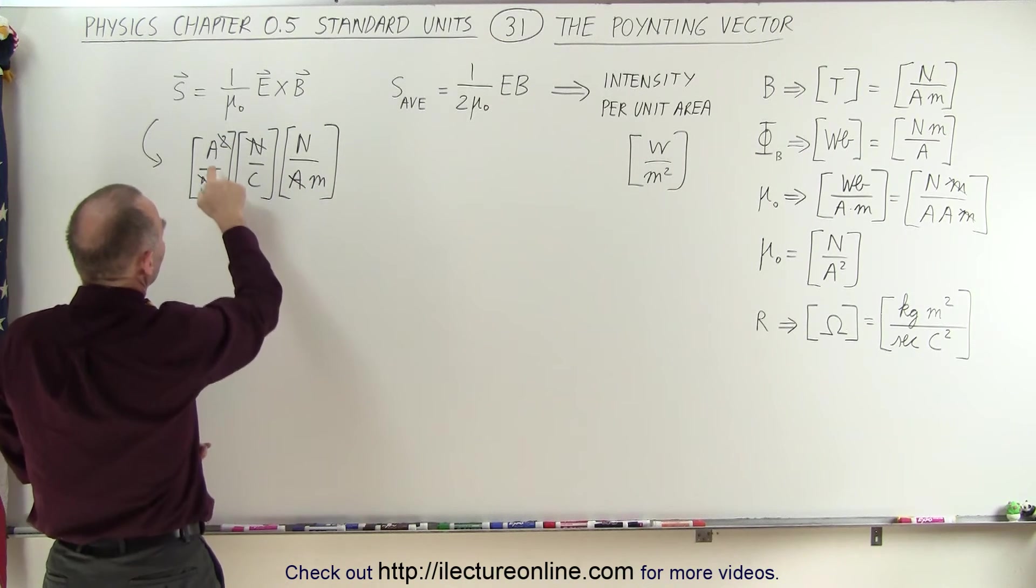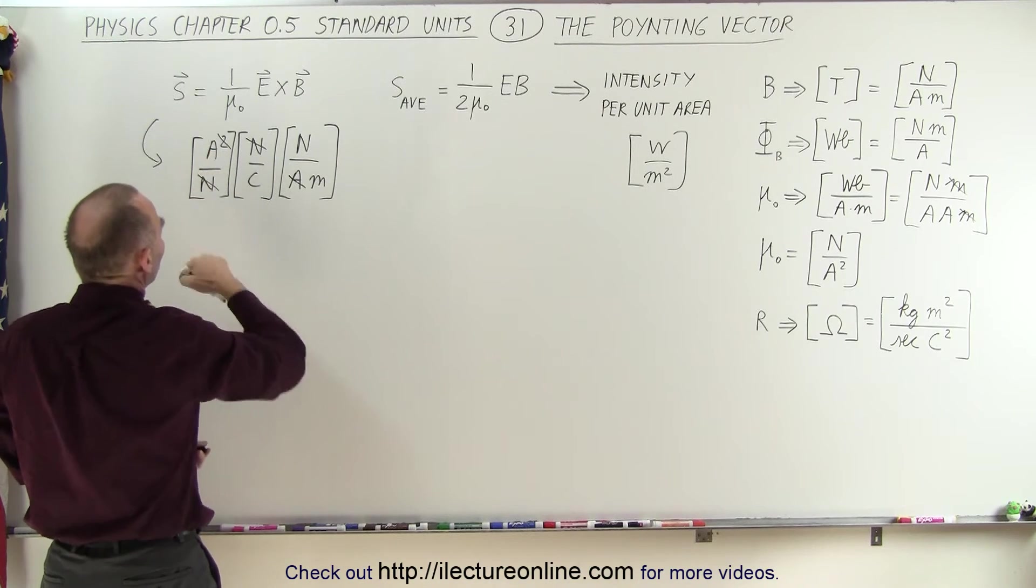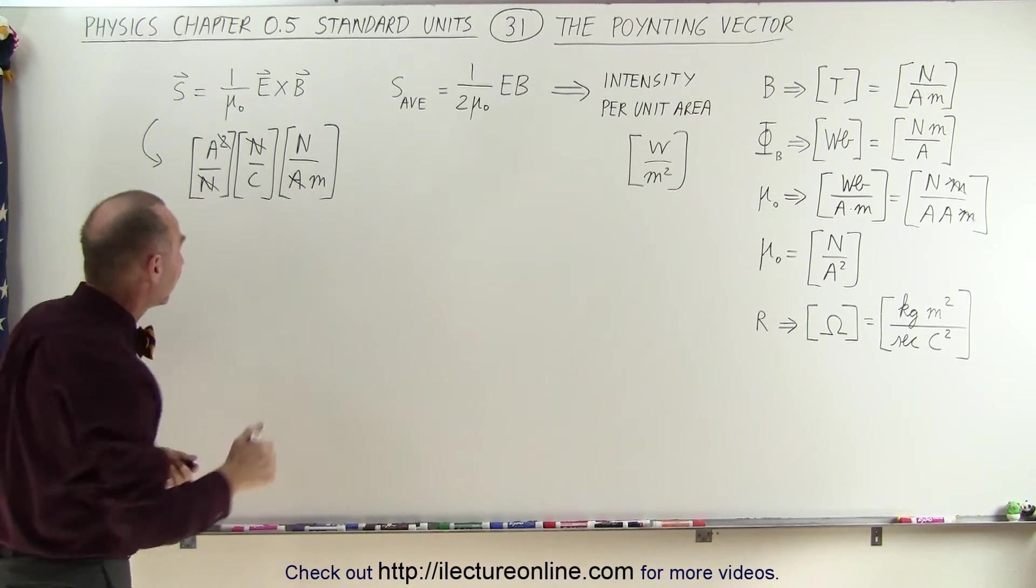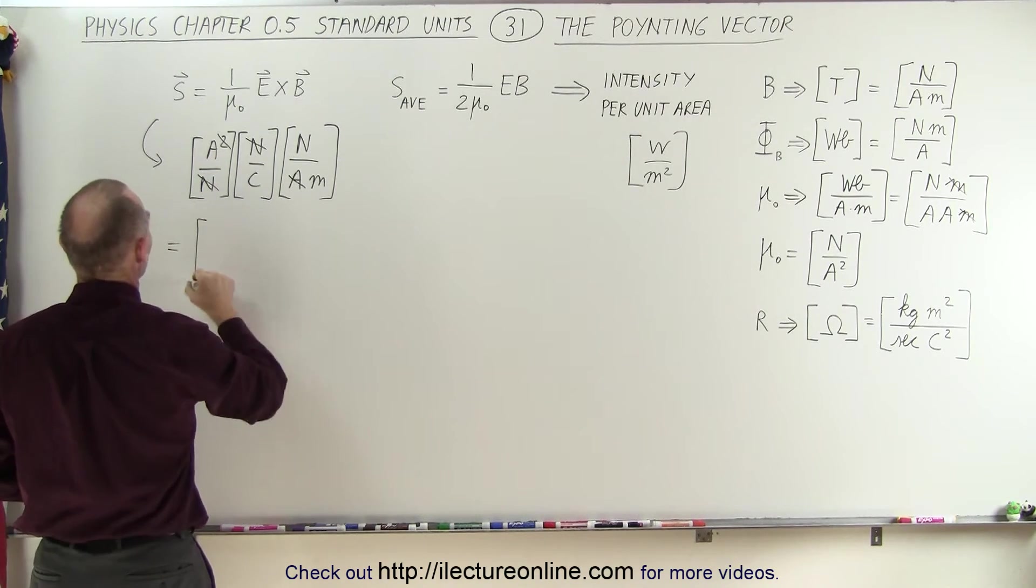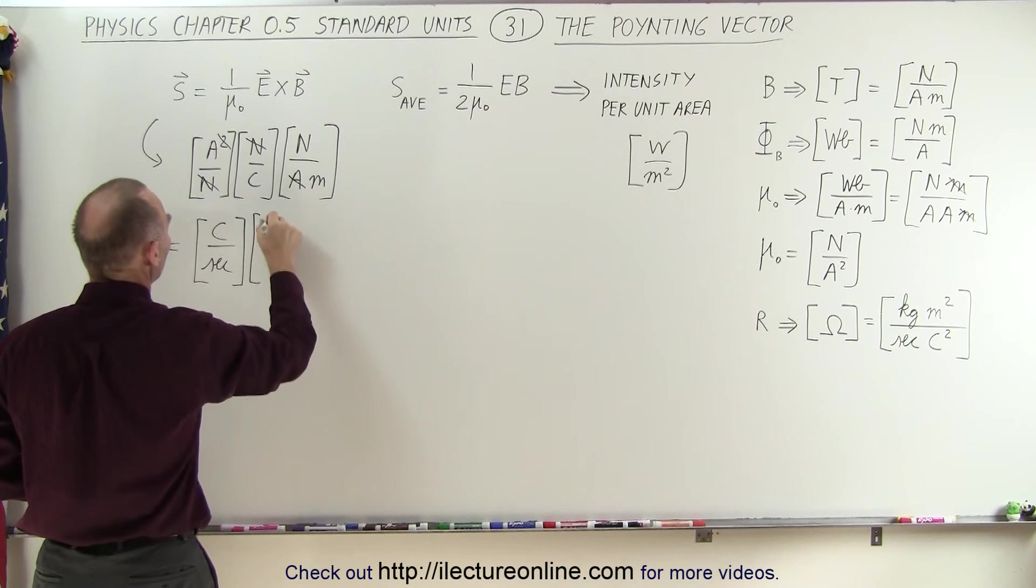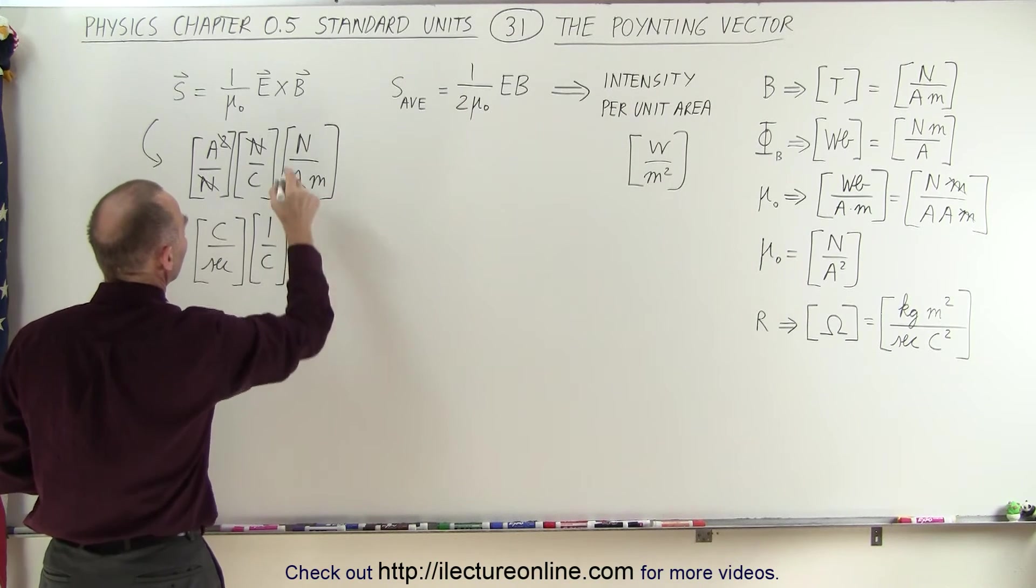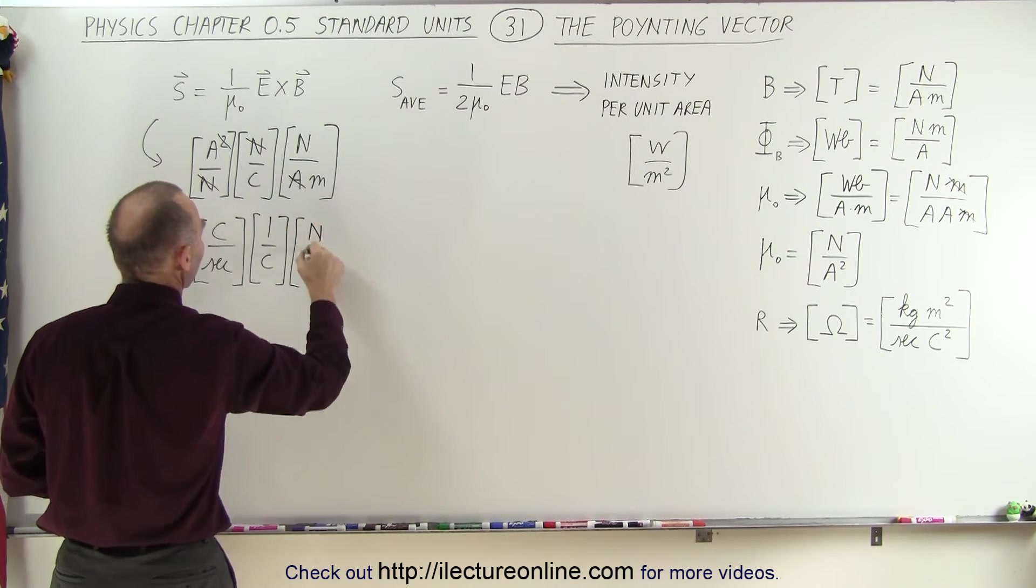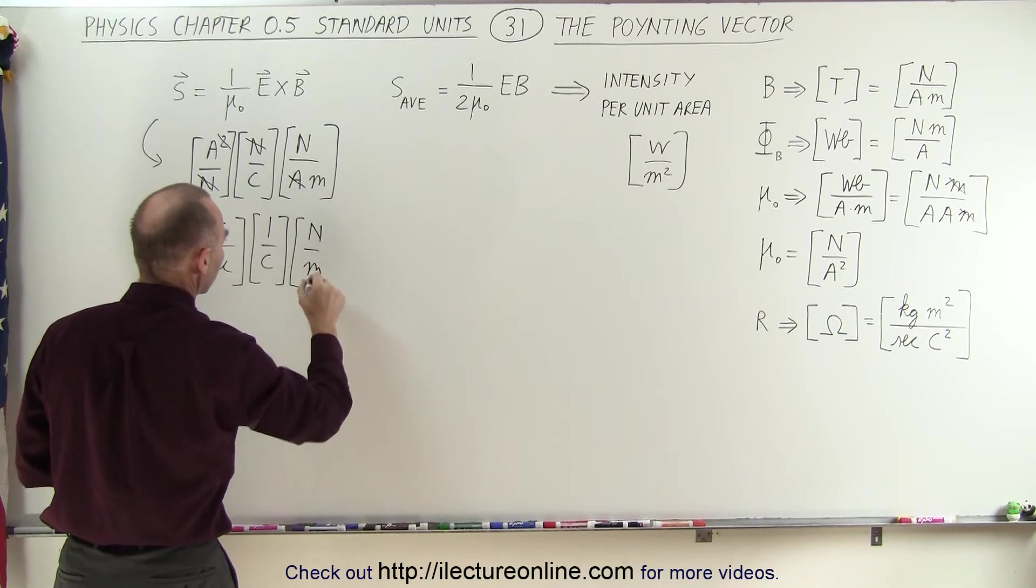But what we have left, an amp can be converted to coulomb per second. So let's go ahead and do that. This can be written as coulomb per second. And here we have 1 over coulomb, and here we have a newton per meter left. It's not a very good looking m. There we go.